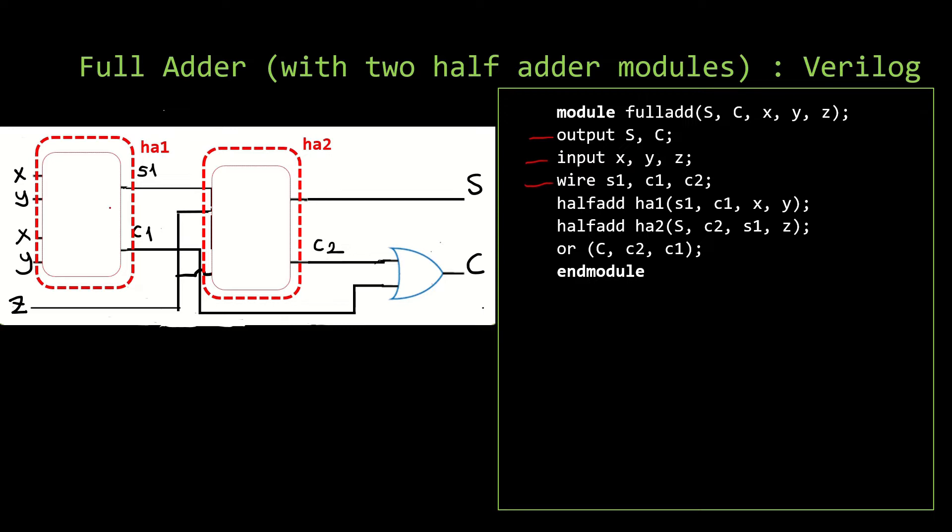In between we have our wires which are S1, C1, and C2 that can be seen there. And here we are instantiating two modules, half-adder modules. The first one having the outputs of S1 and C1 and inputs of X and Y.